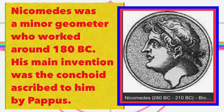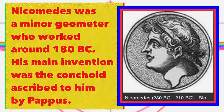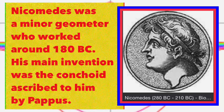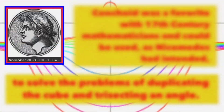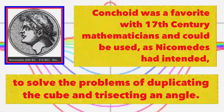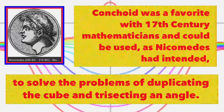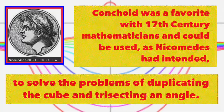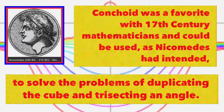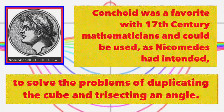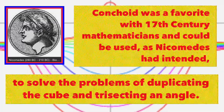Nicomedes was a minor geometer who worked around 100 BC. His main invention was the conchoid, ascribed to him by Pappus. The conchoid was a favorite with 17th century mathematicians and could be used, as Nicomedes had intended, to solve the problems of duplicating the cube and trisecting an angle.